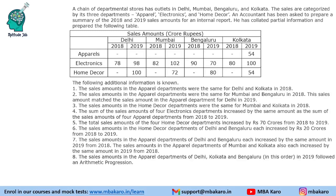Hello everyone, welcome to AptitudeJab. This set from CAT 2020 slot 2 DILR says that there is a chain of departmental stores with outlets in four cities: Delhi, Mumbai, Bengaluru and Kolkata. The sales are categorized by three departments: apparel, electronics and home decor.